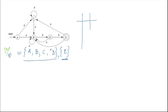We have to check the transition function delta. We have two input symbols, A and B. If you look at state A, if you give small a, it is leading you to state B. At state A, if you give B, then it is leading you to C.